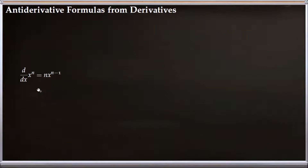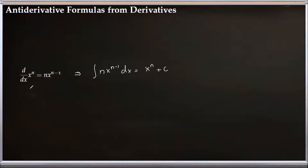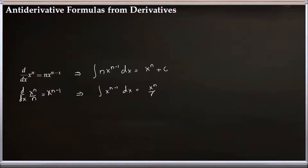Now let's look at the derivative formula: derivative of x to n equals n times x to n minus 1. From here we can say the antiderivative of n·x^(n−1) dx equals x^n plus C. We have a formula for n·x^(n−1), but it would be nice to have a formula for just x^n. So let's divide both sides by n. The derivative formula gives us: derivative of x^n over n equals x^(n−1). So the integral of x^(n−1) dx equals x^n over n plus C.